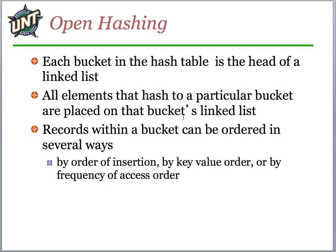With open hashing, we don't have to worry about rehashing strategies. Each bucket is the head element in a linked list — all elements that hash to a particular bucket are placed on that bucket's linked list. The first one becomes the head, then others keep getting linked, giving us a kind of dynamic array at each bucket location. We just search through the list to find the value we want. They can be inserted in order of insertion — easiest — or reordered alphabetically, or by frequency of access. Caches often put the most recently accessed item at the head.